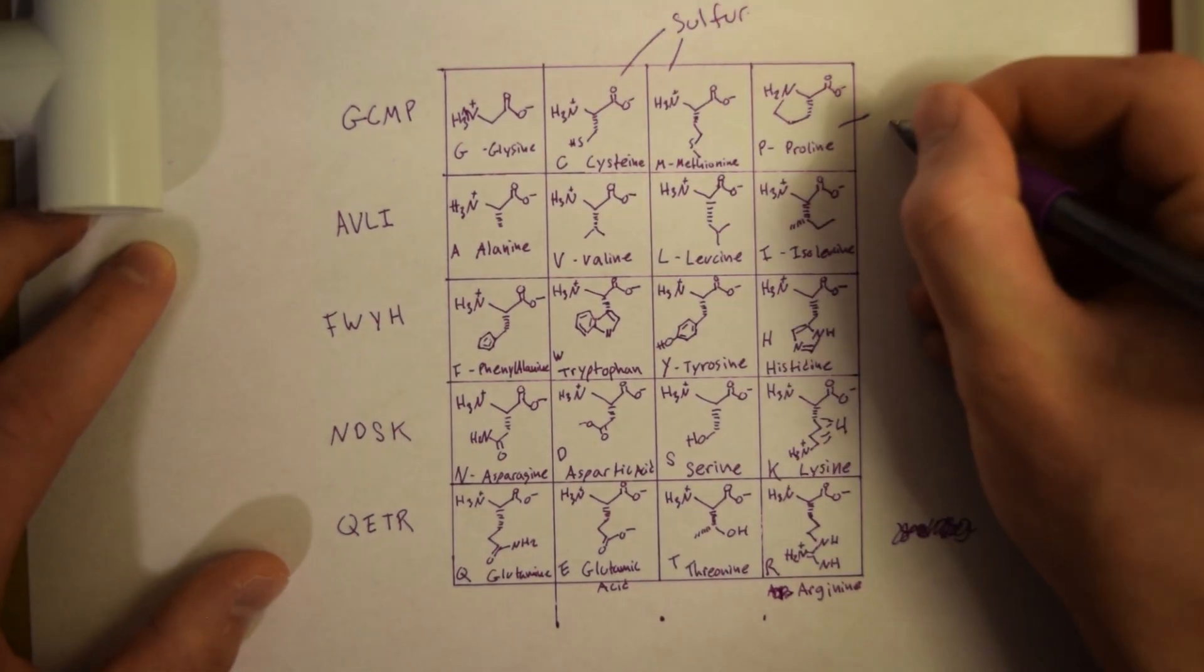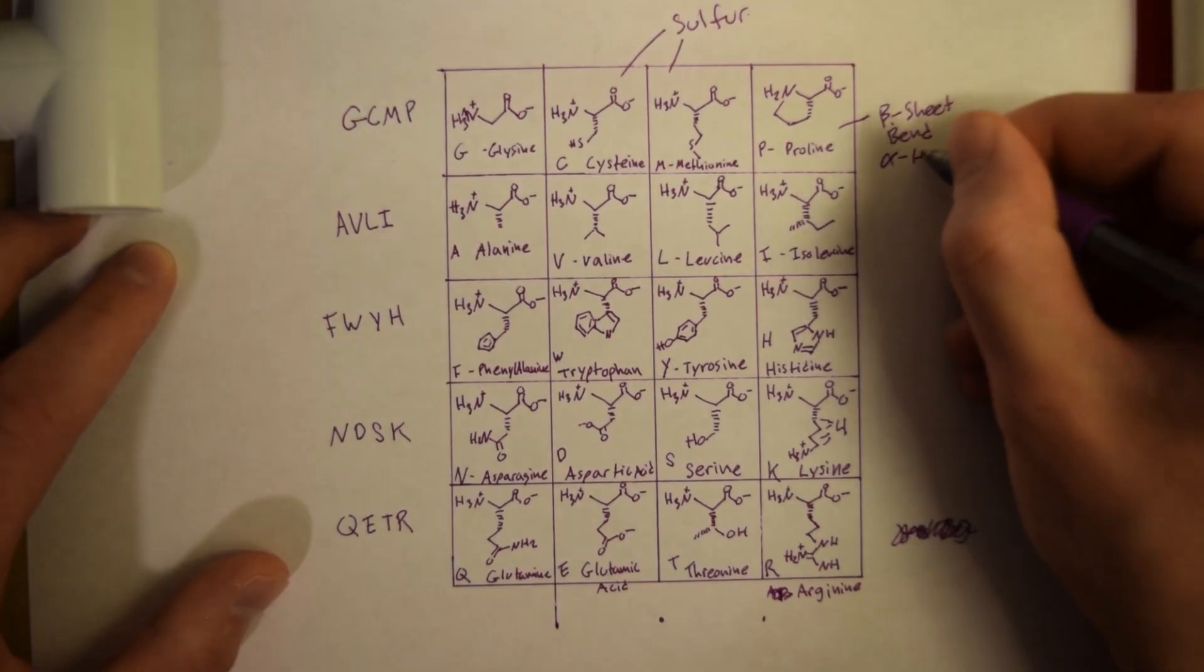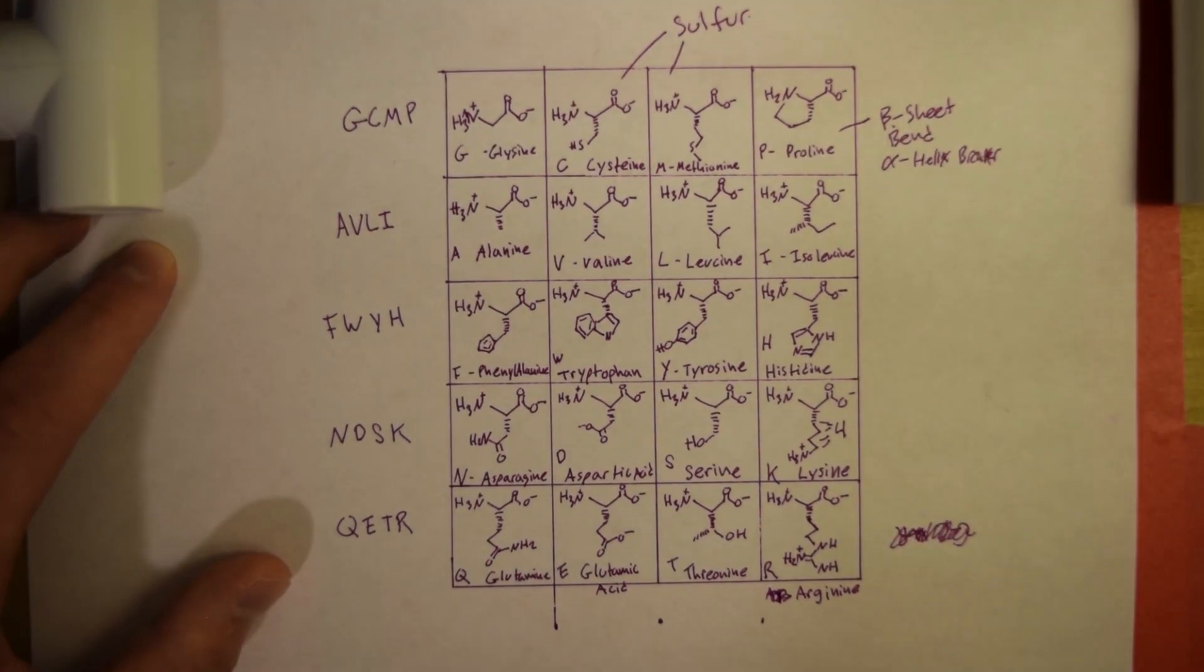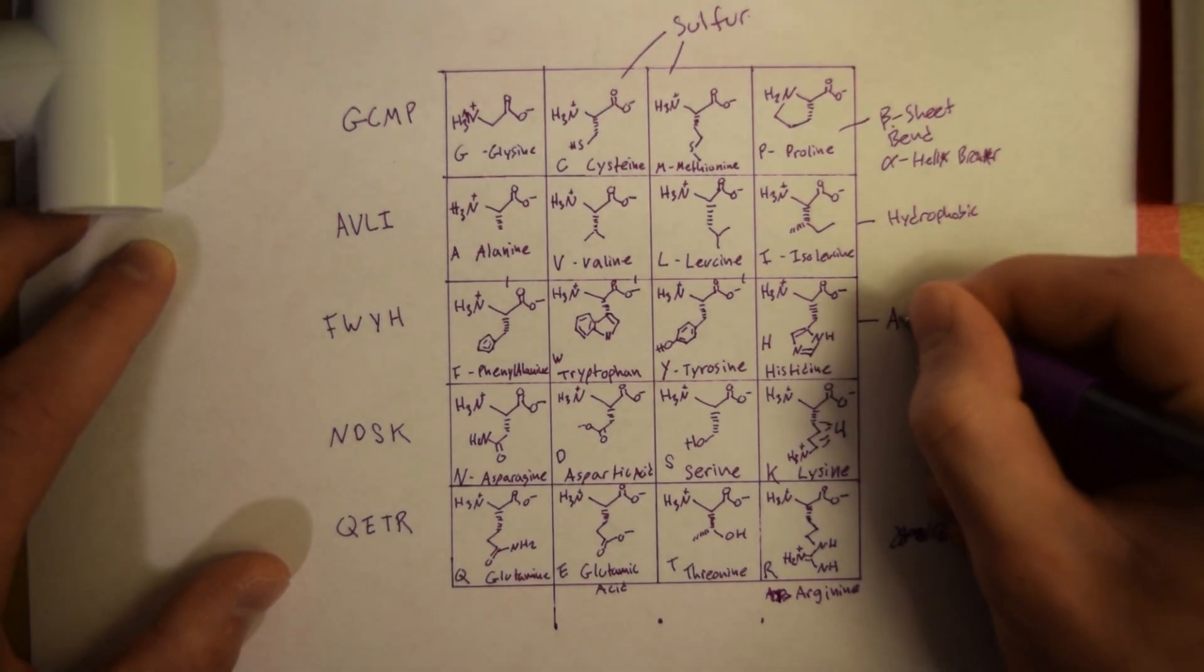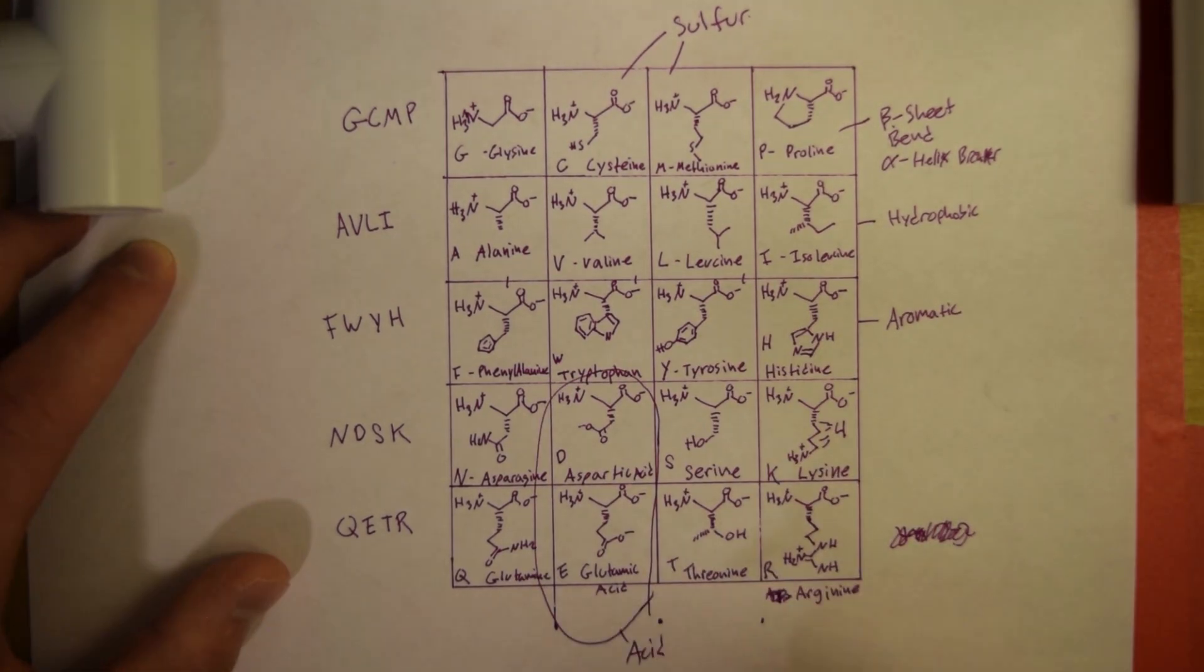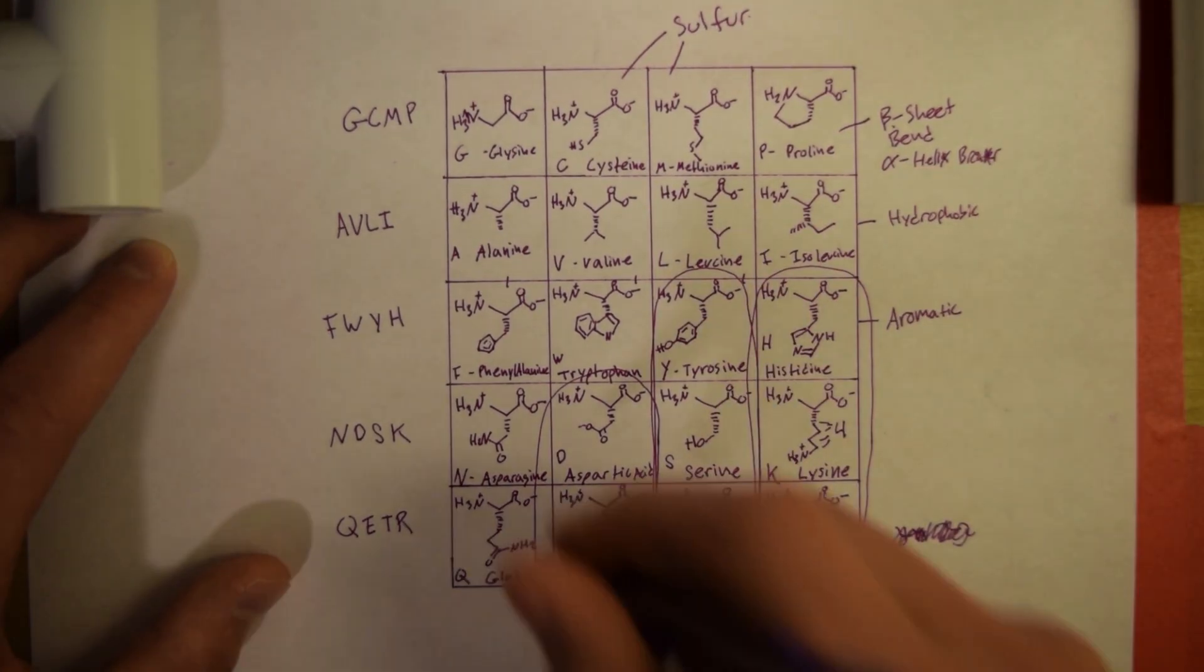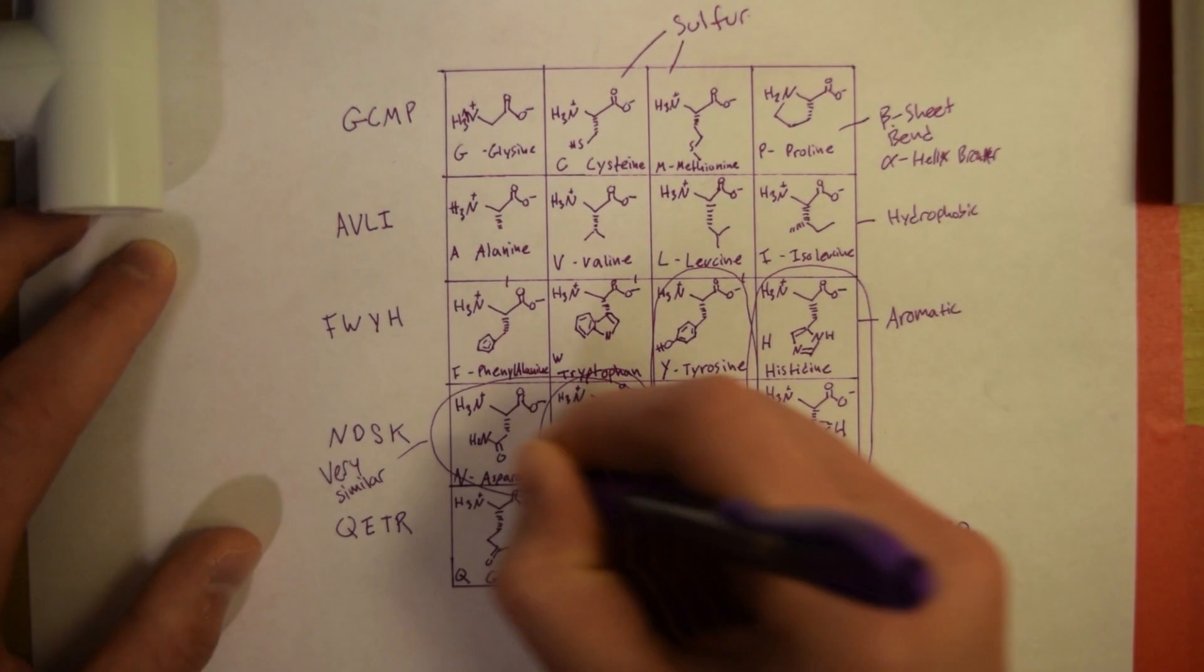So once again, C and M are sulfur. P, proline is the beta bend or alpha helix breaker. AVLI are hydrophobic along with FWY. F, W, H are all aromatic. D and E are acids. Y, S, T are alcohols. H, K, R are all bases. And N, D are similar and Q and E are similar to each other.